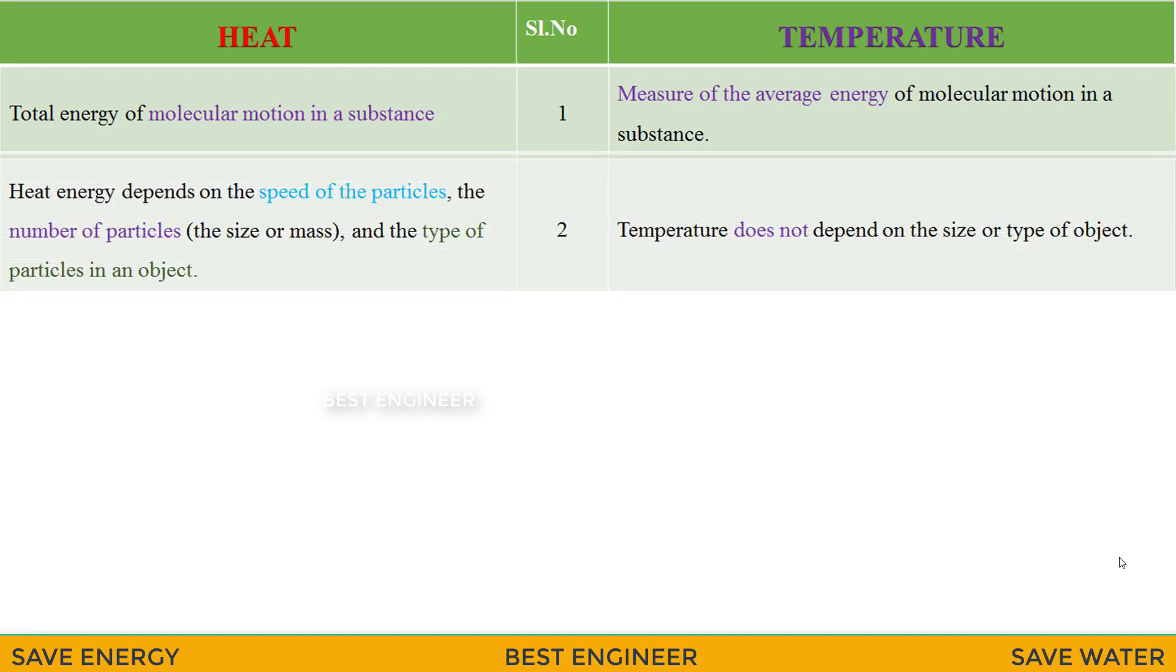Heat energy depends on the speed of the particles, the number of particles, and the type of particles. Temperature does not depend on the size or type of object.